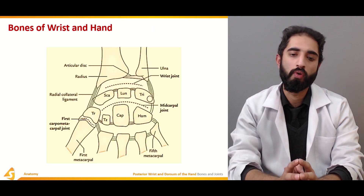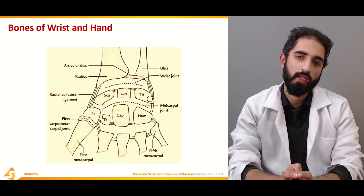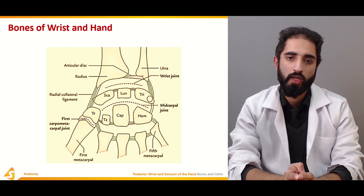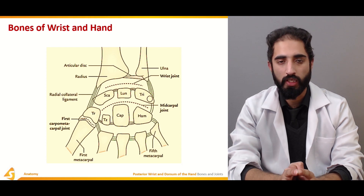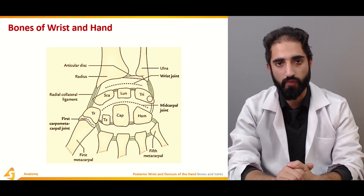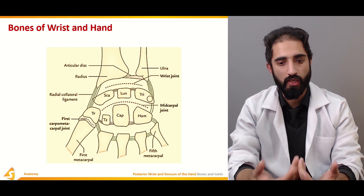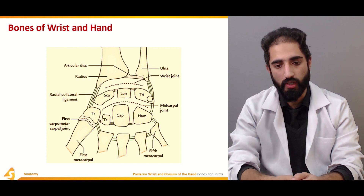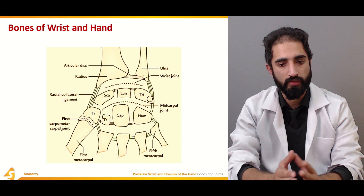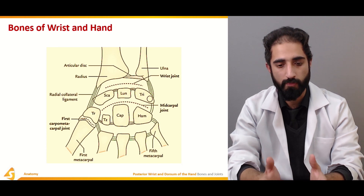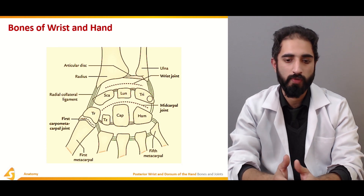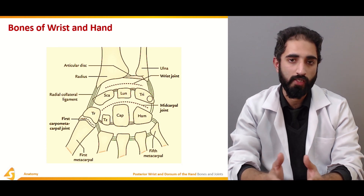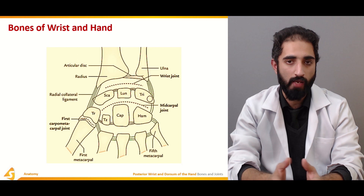Talking about the bones of the wrist and hand, we have the distal aspect of the radius and ulna, then we have the carpal bones: scaphoid, lunate, triquetrum, pisiform, trapezium, trapezoid, capitate, and hamate.